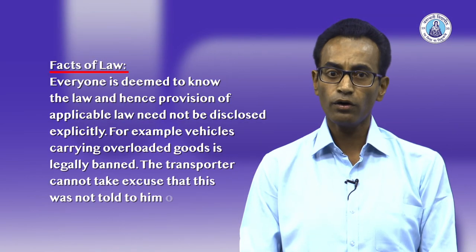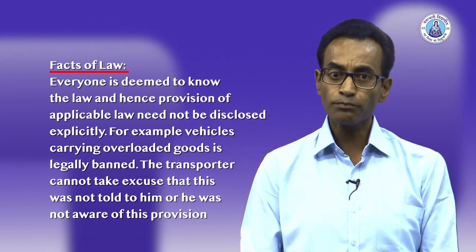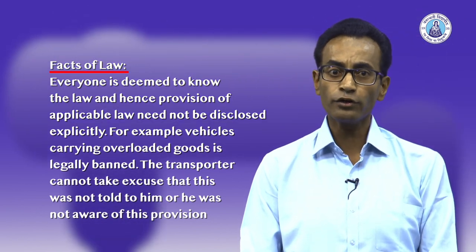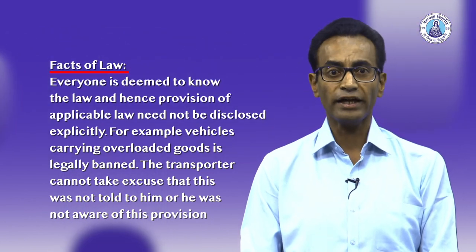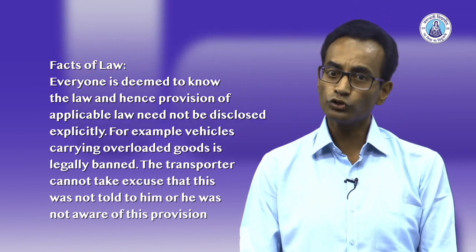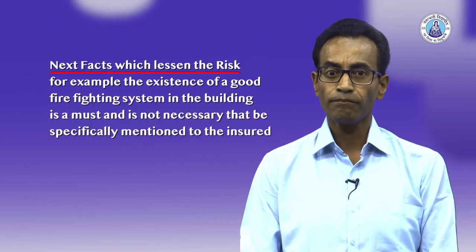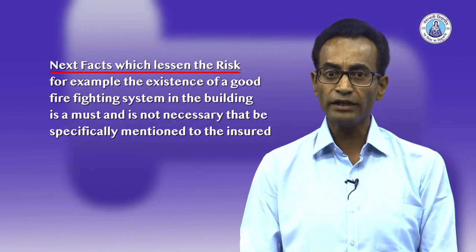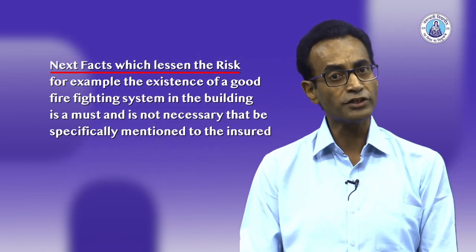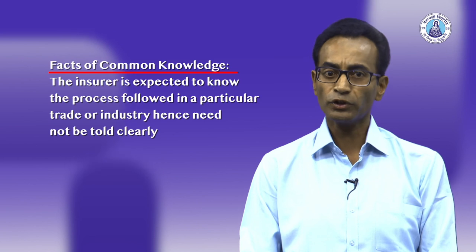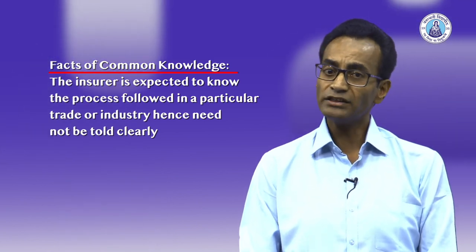Now let us look at those facts which are of material nature but need not be disclosed explicitly. Facts of law: everybody is deemed to know the law, and hence provision of applicable law need not be disclosed explicitly. For example, vehicles carrying overloaded goods is legally banned — the transporter cannot take excuse that this was not told to him or he was not aware of this provision. Next, facts which lessen the risk — for example, the existence of a good firefighting system in the building need not be specifically mentioned to the insured. Similarly, facts of common knowledge: the insurer is expected to know the processes followed in a particular trade or industry and hence need not be told clearly.